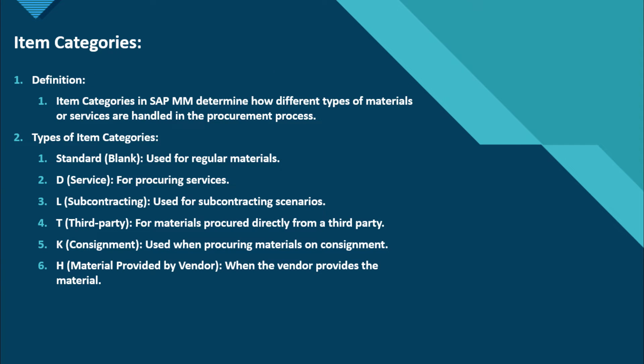Item categories in SAP MM determine how different types of materials or services are handled in the procurement process. If we put blank, it's for regular materials. D is for service — procuring services. L is for subcontracting, used in the subcontracting process. T is third party, for materials procured directly from a third-party source. K is for consignment, used when procuring materials for the consignment process. And H is material provided by vendor.